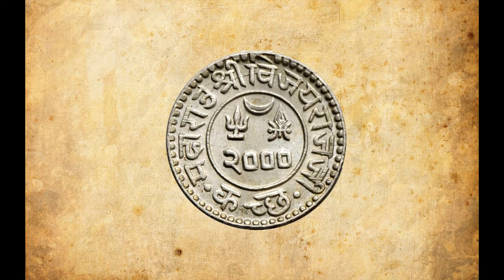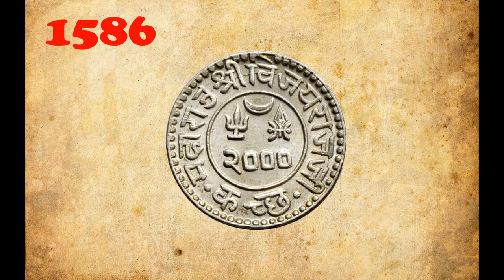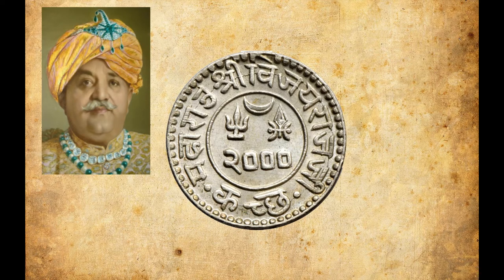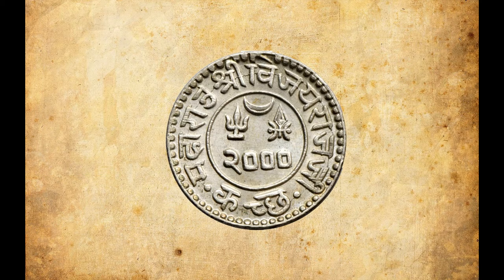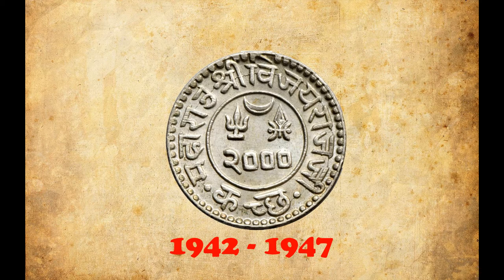Let us look into the features of this one Kauri coin of Kutch. Kauri was the currency of Kutch since 1586. The coin shown here is issued by Maharal Vijayaraj G., the 17th Maharal of Kutch, when King George VI was the Emperor of India. It was a standard circulation coin between 1942 to 1947.